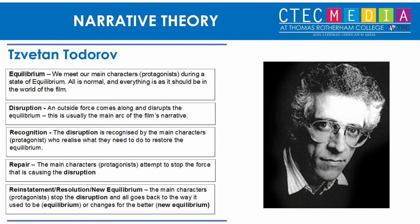Right, we now need to move on to the three main narrative theories. The first theory is by Zvetan Todorov, and what Todorov argued was that any form of storytelling or narrative follows a very similar structure — arguably set into five different stages: equilibrium, disruption, recognition, repair, and reinstatement, also called resolution or new equilibrium. If you think about this theory, you can apply a lot of examples to it. It does fit surprisingly well.